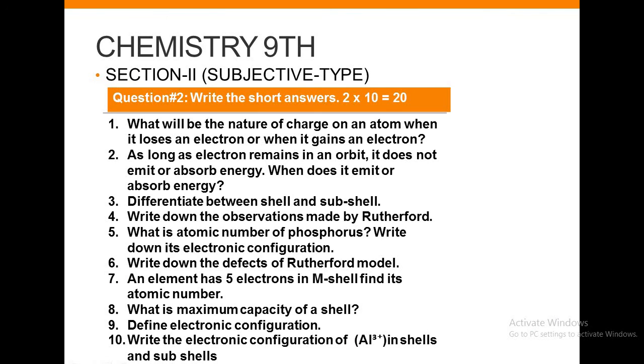Next is Section 2: Subjective type questions. Write the short answers. Here I have 10 questions added. These 10 short questions are very important. First: What will be the nature of the charge on an atom when it loses an electron or when it gains an electron? Next: As long as an electron remains in orbit, it does not emit or absorb energy. When does it emit or absorb energy?